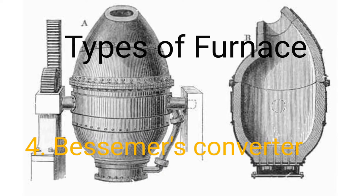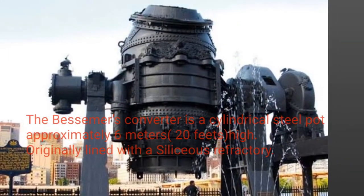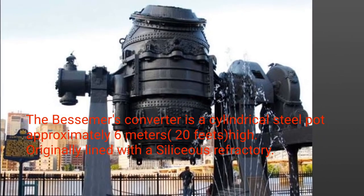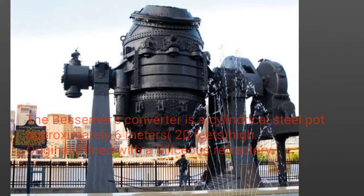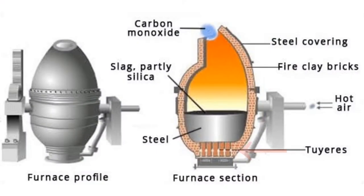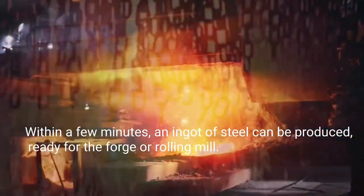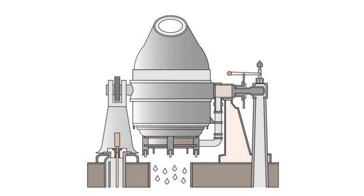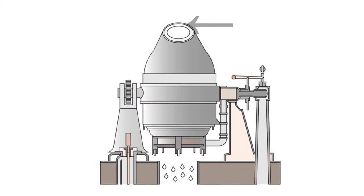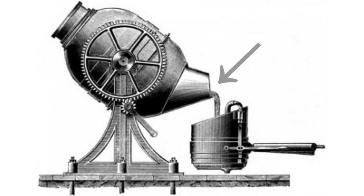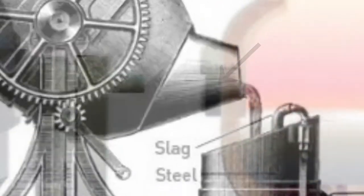Type 4: Bessemer's Converter. The Bessemer's converter is a cylindrical steel pot approximately 6 meters (20 feet) high, originally lined with a siliceous refractory. Air is blown in through openings near the bottom, creating oxides of silicon and manganese which become part of the slag, and oxides of carbon which are carried out in the stream of air. Within a few minutes, an ingot of steel can be produced ready for the forge or rolling mill. An opening at the narrow upper portion allows iron to be introduced and the finished product to be poured out.